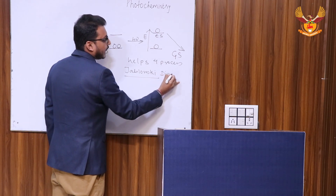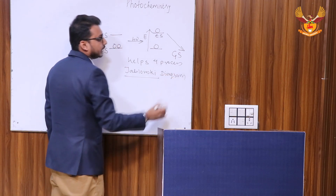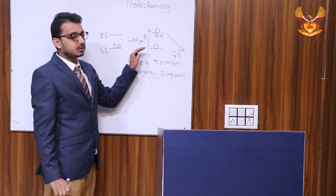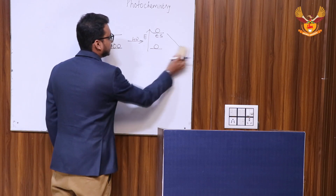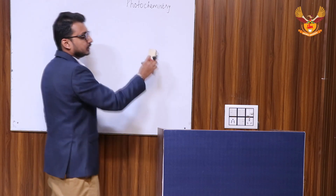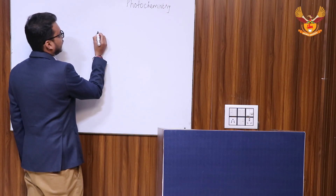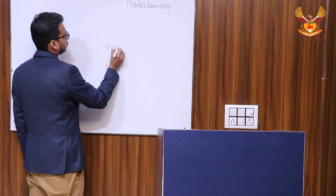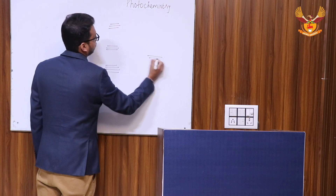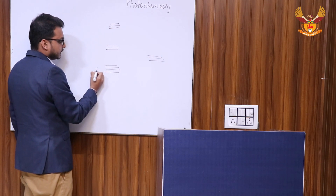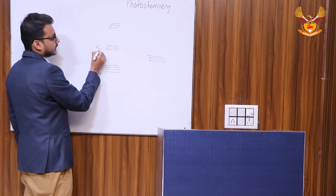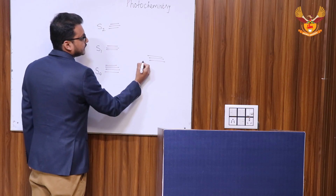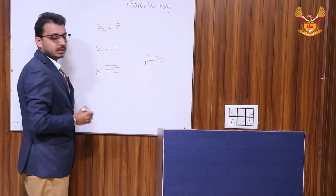Jablonski was a scientist who gave a diagram to show how a molecule from the excited state moves to the ground state. I will be explaining with the help of the Jablonski diagram, which shows us the fate of the molecule as it moves from ground state to excited state. This is my ground state denoted by S₀, this is the first excited singlet state S₁, and this is the second excited singlet state S₂.